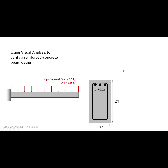A quick note: in class I didn't split out the dead and live loads. The superimposed dead load is the dead load on top of the self-weight. For your homework, which is similar, you have to calculate the self-weight. First you do the design, then you know the size, and then you can figure out the self-weight. I take the beam dimensions — 12 inches by 24 inches — multiply by the density of reinforced concrete at 150 pounds per cubic foot, do a unit conversion, and that gives me 0.3 kip per foot. This beam weighs 300 pounds per foot.